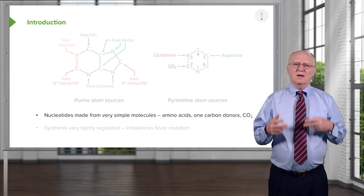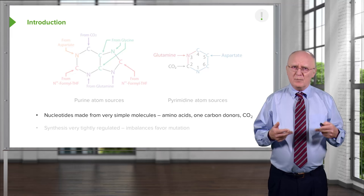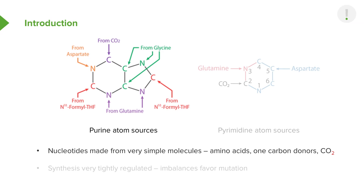Nucleotides are made from very simple components: amino acids, one-carbon donors, and carbon dioxide. Looking at the sources of the atoms used to make purines, in green we see atoms that come from the amino acid glycine. In purple, atoms from glutamine. We also see a single carbon from carbon dioxide, a nitrogen from aspartic acid, and two other carbons from folate derivatives, described in another lecture in this series.